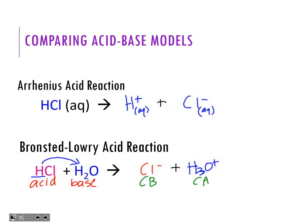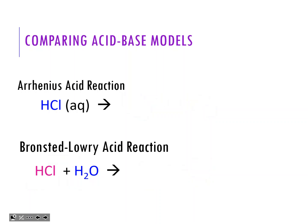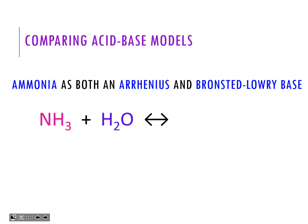Notice the different formats. The Arrhenius definition says it produces hydrogen ions in water - just breaking them apart. The Bronsted-Lowry actually shows the transfer, and you end up seeing water as part of your reaction, as well as hydronium and chloride on the other side. Now, ammonia is one of the few weak bases you see frequently in chemistry.